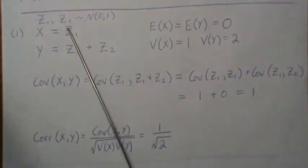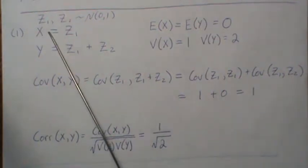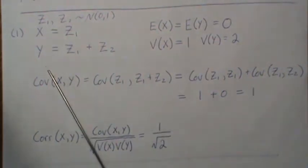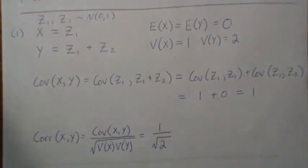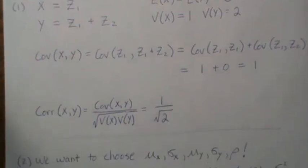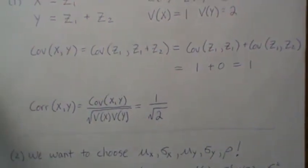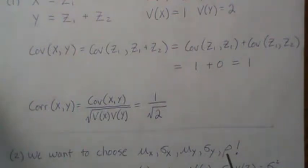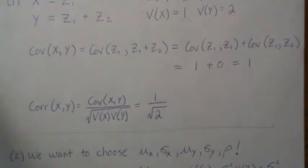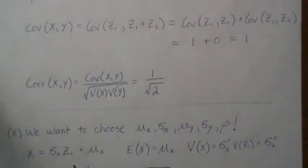How do we manipulate z1 and z2 to make x and y normal random variables with the means and variances we want, and also have a correlation of ρ? That's what part two addresses — choosing the means, standard deviations, and correlation between the two variables.